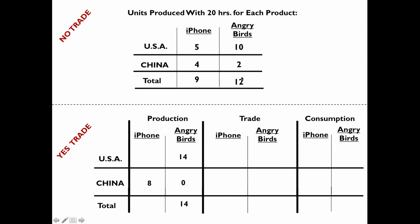If the US produces 14 Angry Birds and China produces no Angry Birds, the world produces 14 Angry Birds — which is 2 more than 12. The US produces 3 iPhones plus the 8 that China produced gives us 11 iPhones. As planned, the world is now able to produce 2 more iPhones than before — 11 versus 9 — and 2 more Angry Birds than before. It is clear that as a world we're able to produce more because countries are specializing, and clearly these countries are going to be able to consume more.